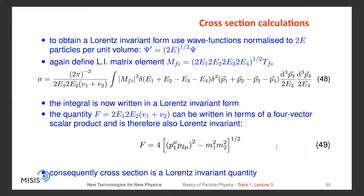To obtain a Lorentz-invariant form, we use wave functions normalized to 2E particles per unit volume as before. We define a Lorentz-invariant matrix element M and replace T with M, acquiring additional factors of 2E₁, 2E₂ in the flux and 2E₃, 2E₄ in the integral. Now we can see the integral is written in Lorentz-invariant form. To confirm, we note that the flux factor can be written as a four-vector scalar product and is therefore automatically Lorentz invariant. Therefore the cross-section is also a Lorentz-invariant quantity.